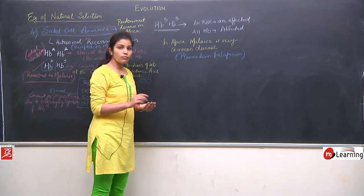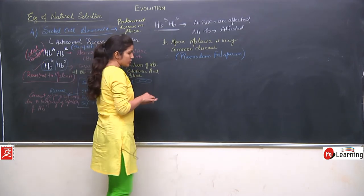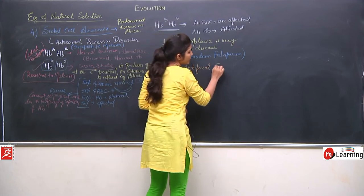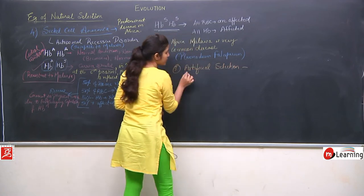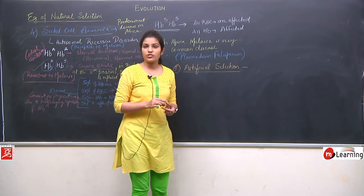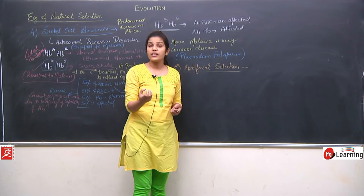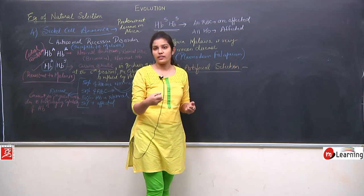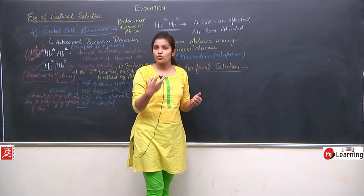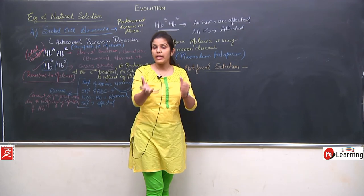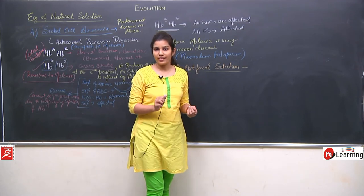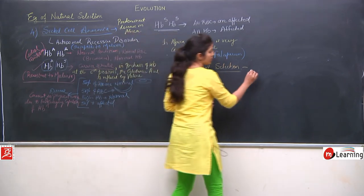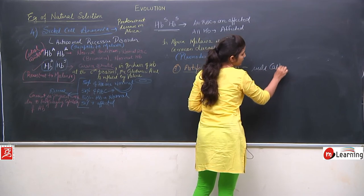We will discuss one more example of natural selection: artificial selection. This is the 5th example. Artificial selection means we are selecting organisms artificially according to our needs. One important example studied under artificial selection is wild cabbage.